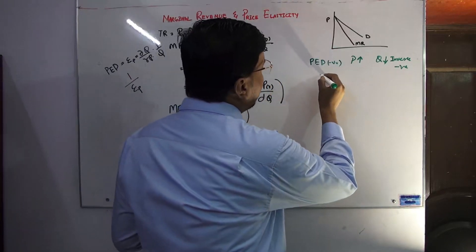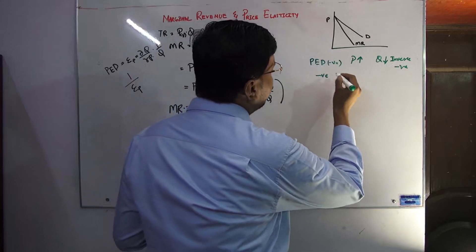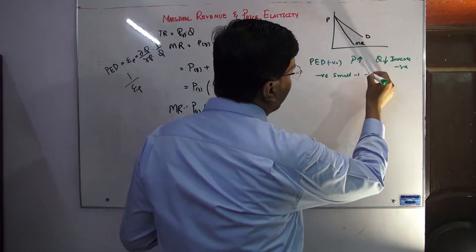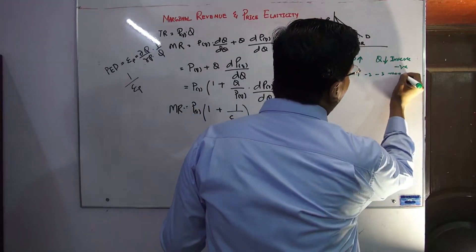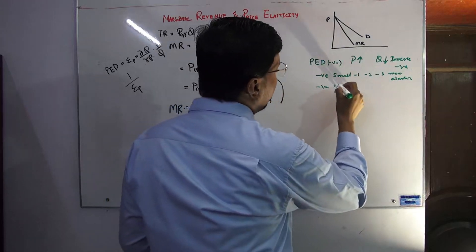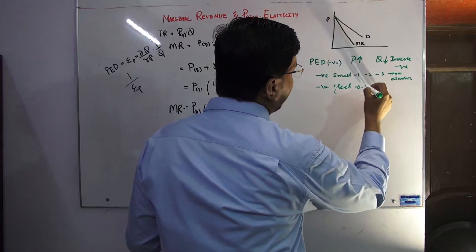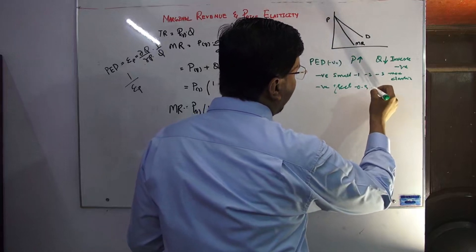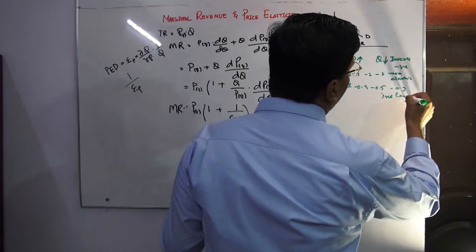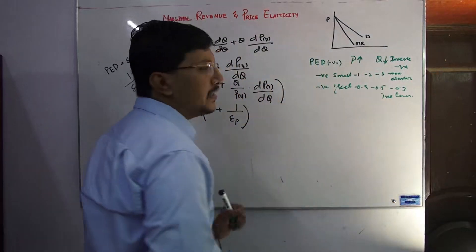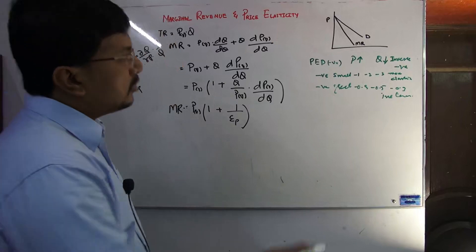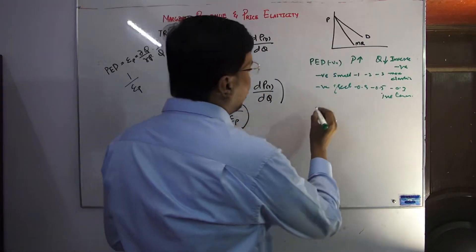If the negative value is smaller (e.g., minus one, minus two, minus three), then the demand is more elastic. If the negative value is greater (closer to zero, e.g., minus 0.9, minus 0.5, minus 0.3), then demand is more inelastic. And minus one means unit elastic. We keep this in mind as we see three situations arise.